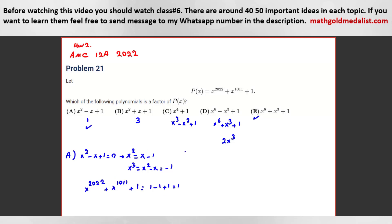For B, if we do the same thing, x cubed will be 1. And then it will be 1 plus 1 plus 1, which is 3. Good job.